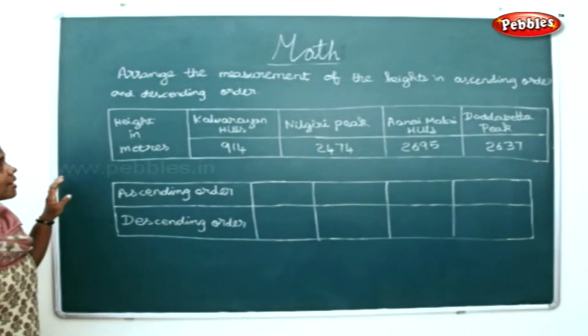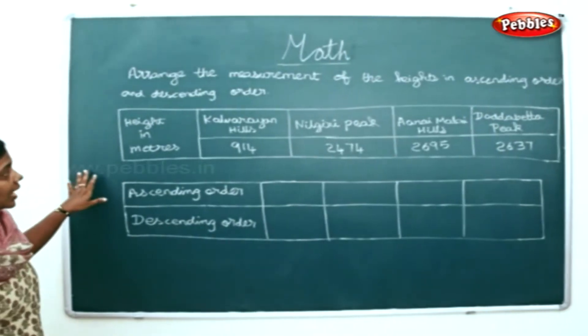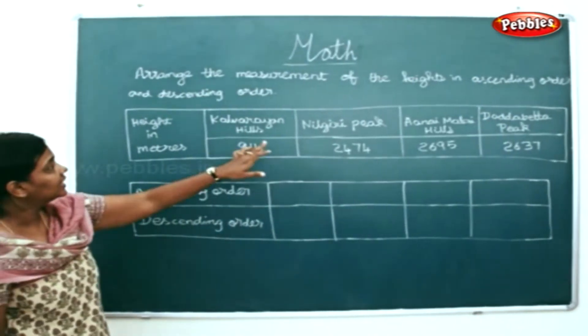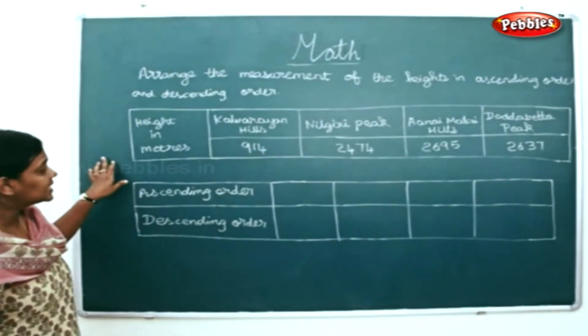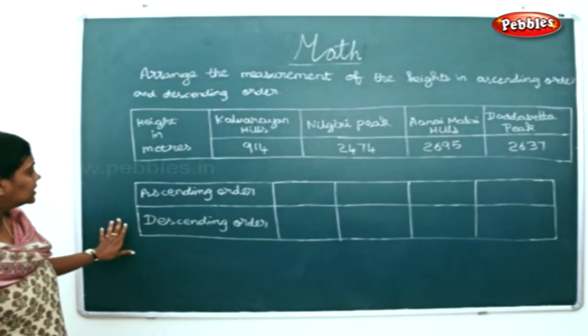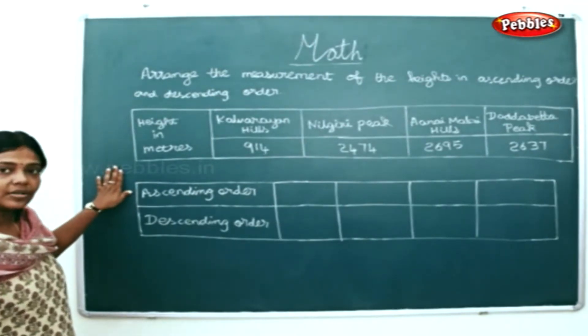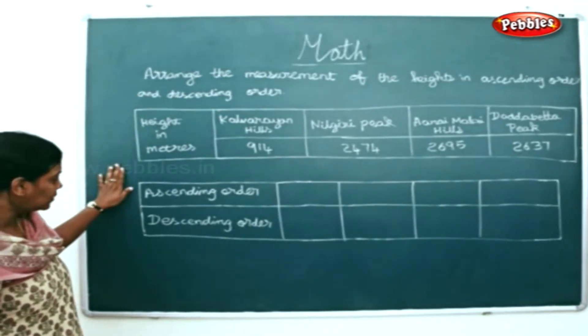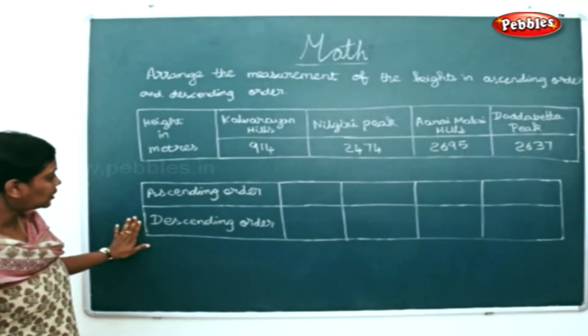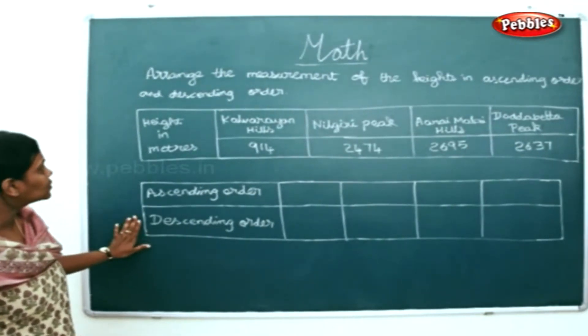Now, we will arrange the measurement of the heights for the given hills in ascending and descending order. As I told you, ascending order is small to big, and descending order is big to small.